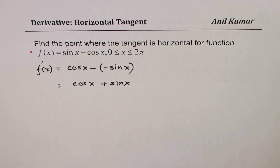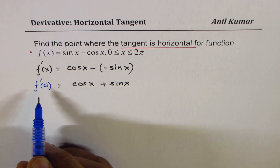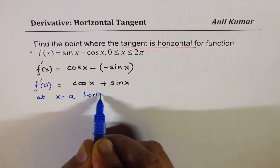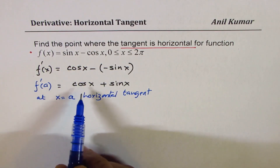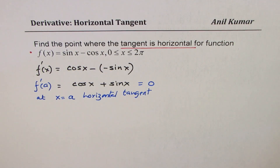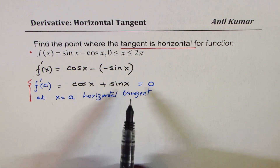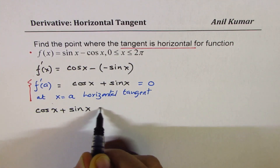When we say 'where is the tangent horizontal,' we mean at some point x = a there is a horizontal tangent. That means the derivative should be 0 at that point. This is the key to understand — once you understand that, we can easily find the value. So we are saying that cos x + sin x = 0.